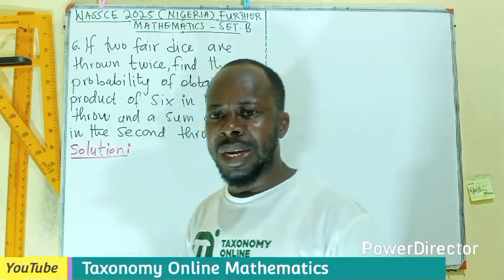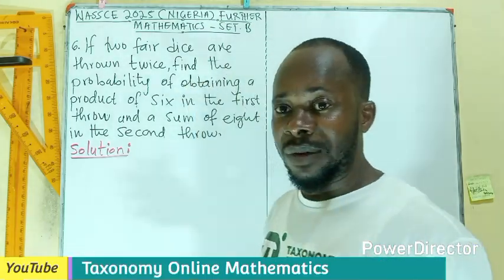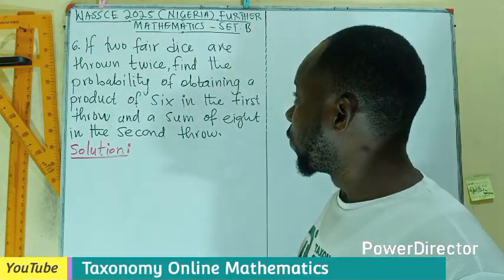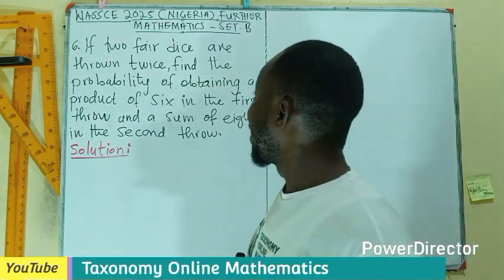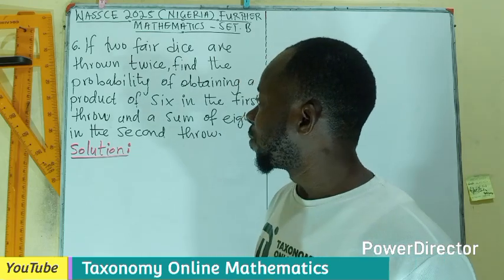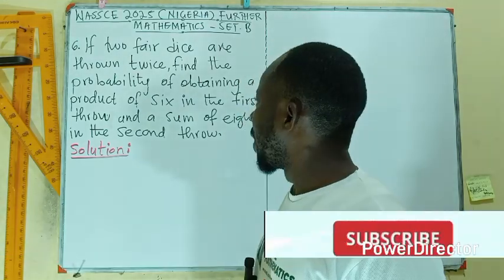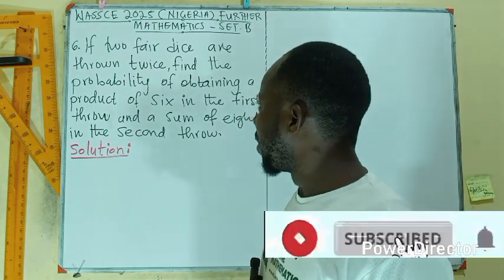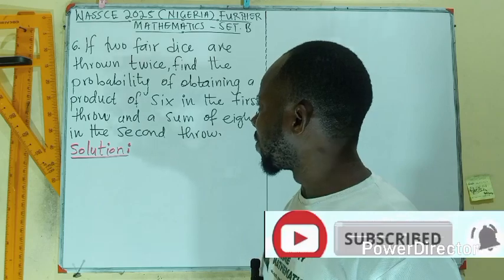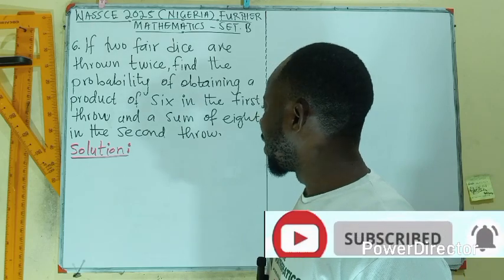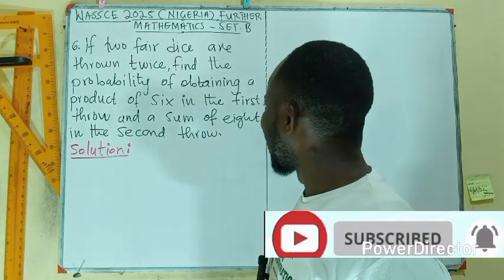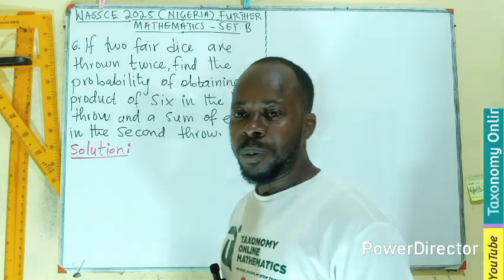Hello, welcome. Question number six of section B. If two fair dice are thrown twice, we have to find the probability of obtaining a product of six in the first throw and the sum of eight in the second throw.